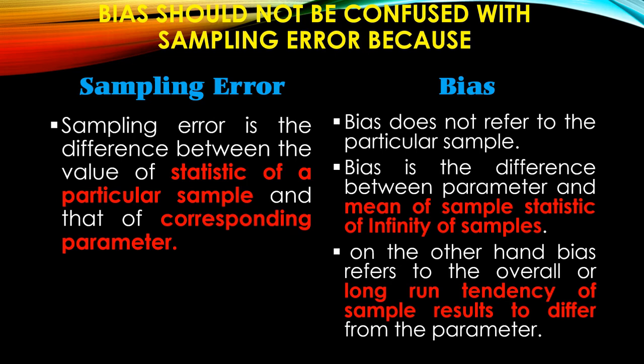On the other hand, bias refers to the overall, long-run tendency of sample results to differ from the parameter.